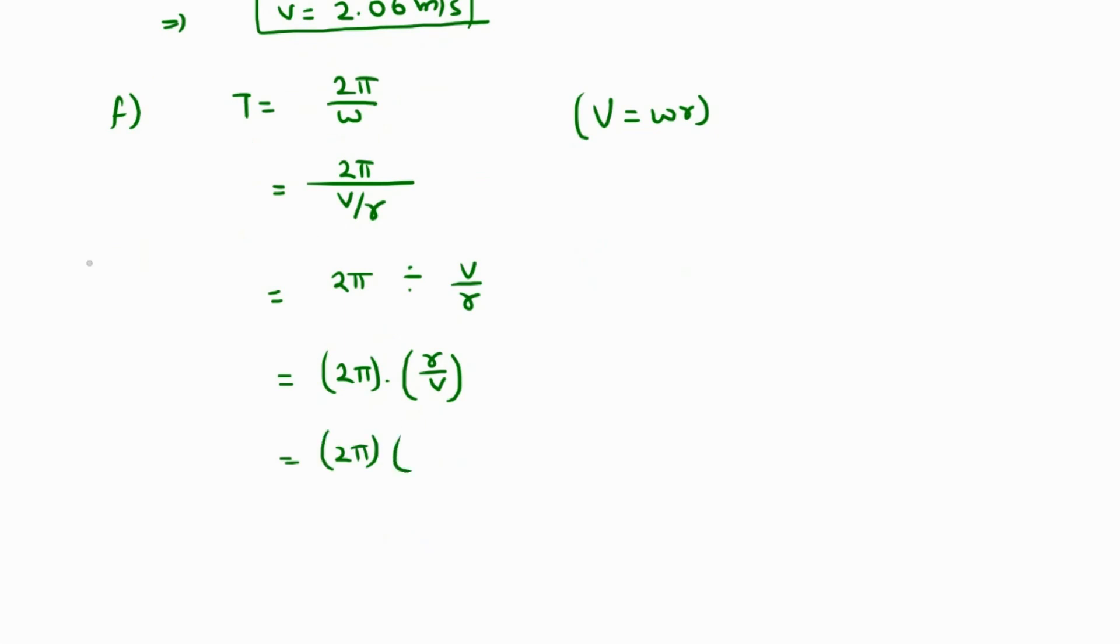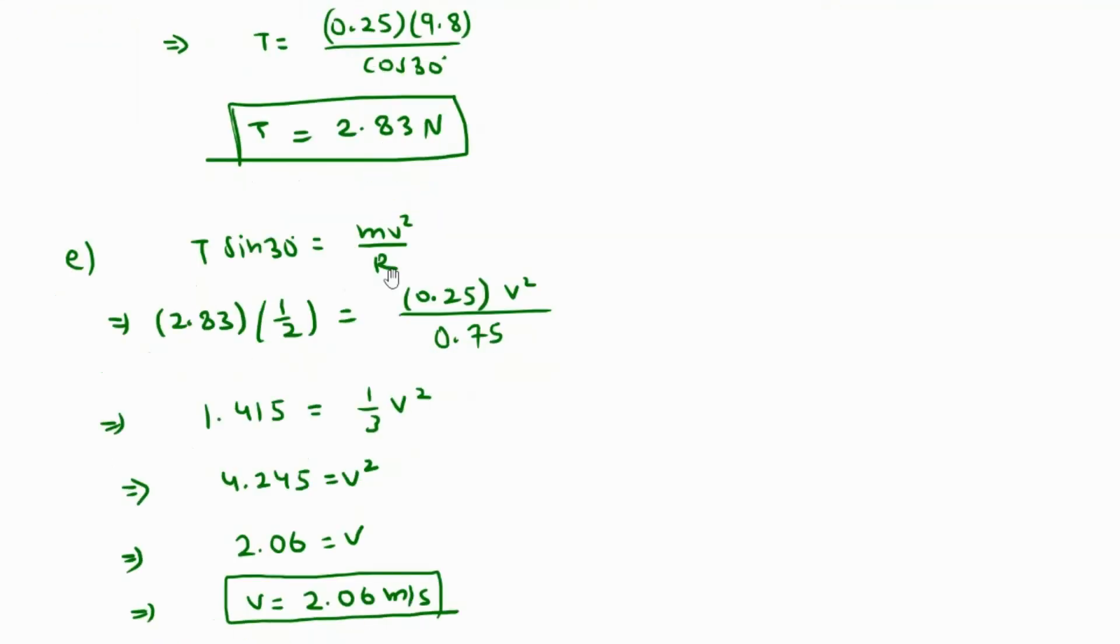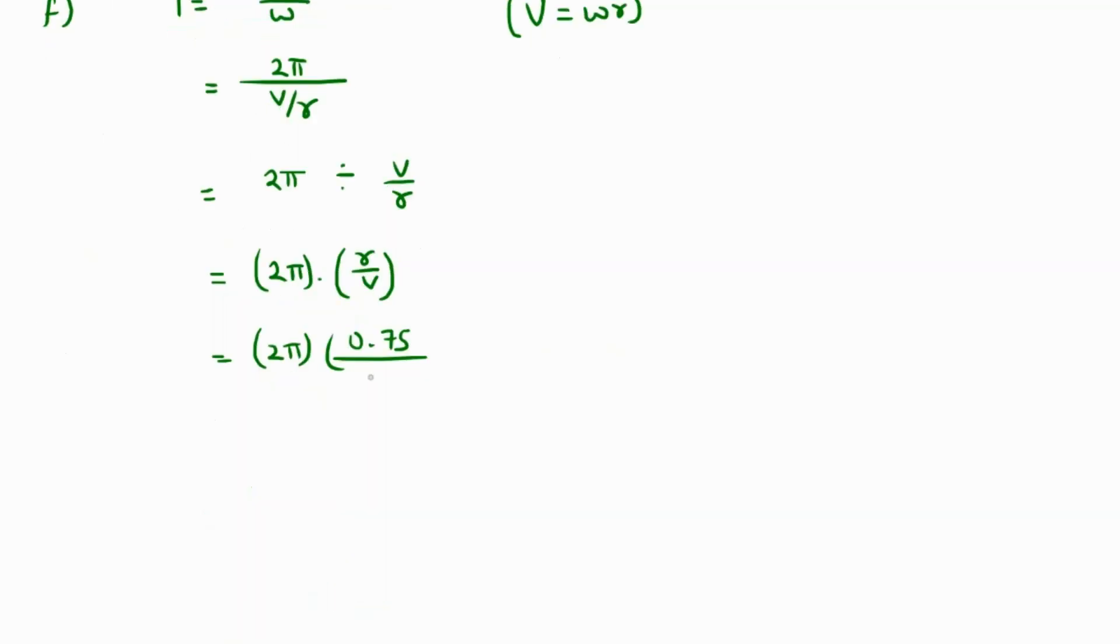This becomes 2 pi times R over v. The value of R is 0.75 meters and the value of velocity is 2.06. So this value comes out as 0.75 times 2 pi over 2.06, which is 2.29 seconds. That is the time period.